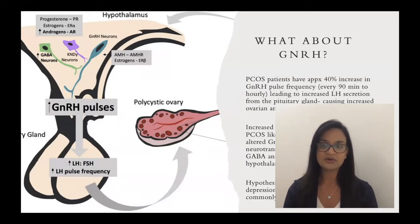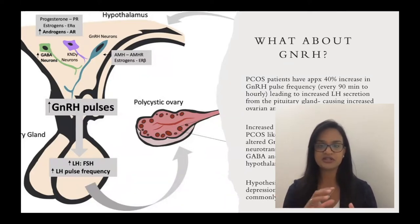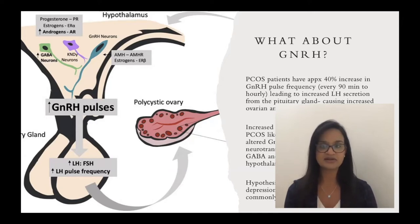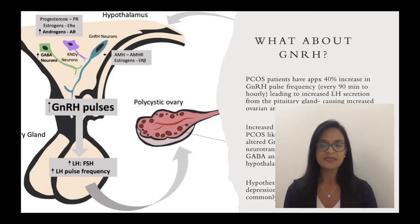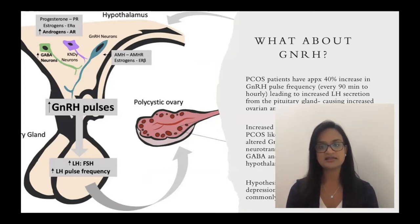Increased gonadotropin releasing hormone and LH pulsatile nature in PCOS probably result from the cumulative effect of altered GnRH stimulatory and inhibitory neurotransmitters. This affects serotonin, dopamine, GABA, and acetylcholine in the hypothalamic-pituitary center. The hypothesis therefore is that this may cause depression and anxiety-like mood disorders commonly seen in PCOS by throwing off this axis.